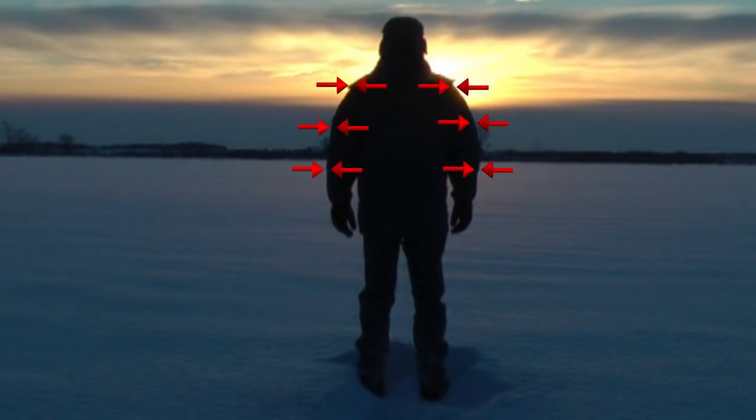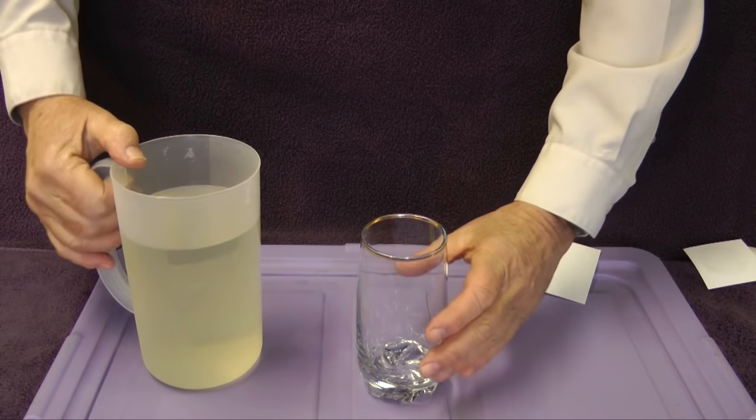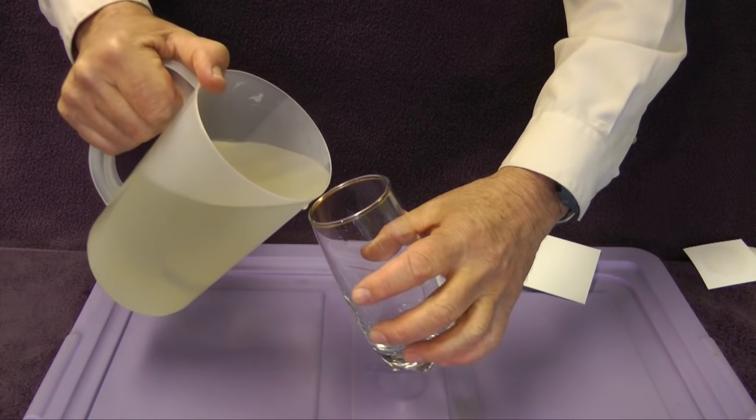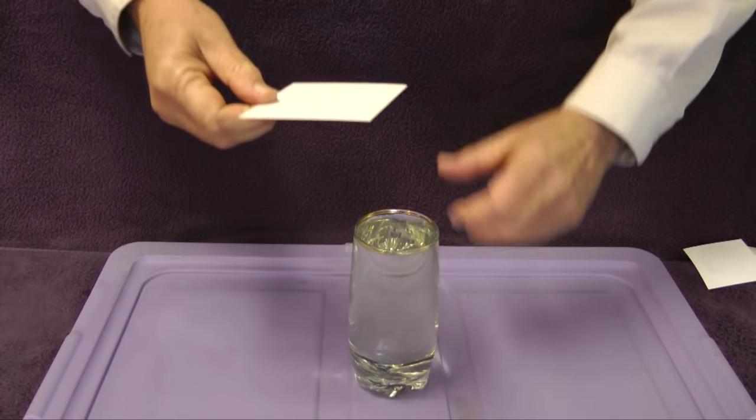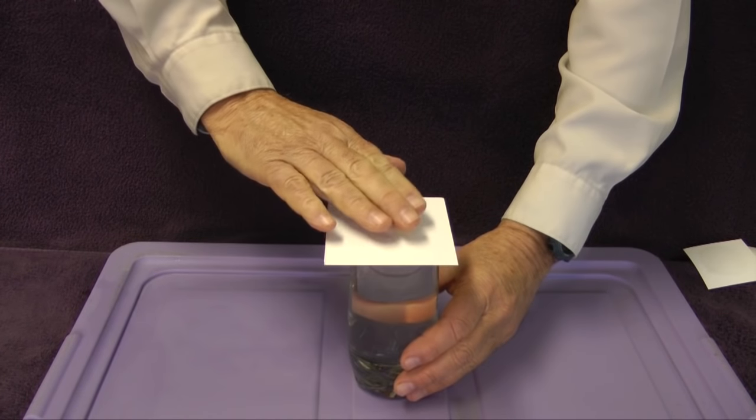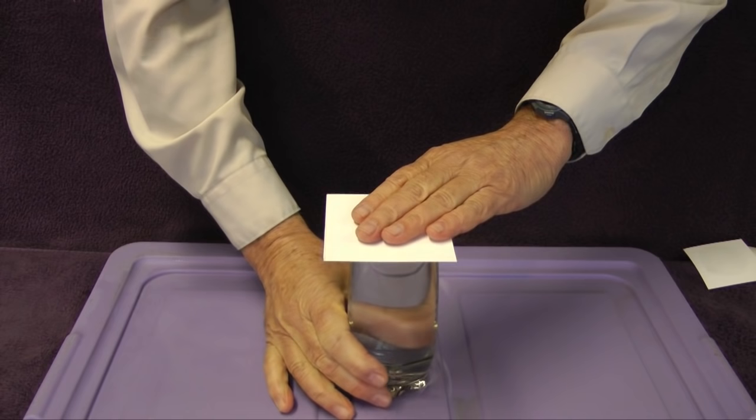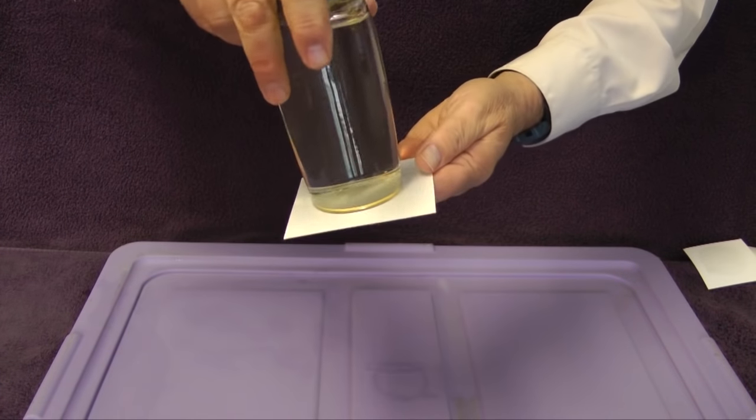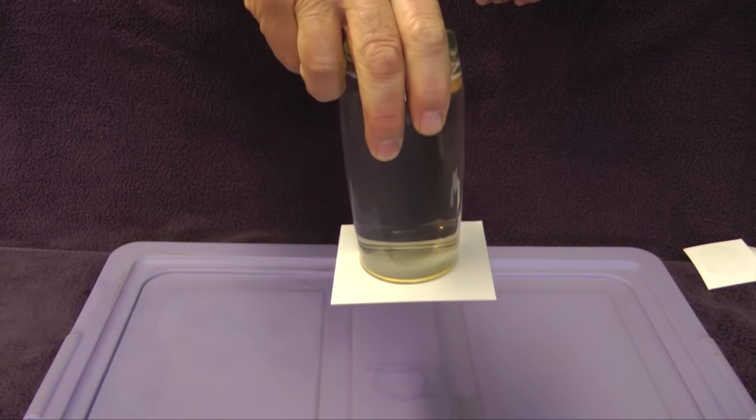Here is a simple demonstration that reveals the presence of atmospheric pressure. Fill a glass with water. Cut a small piece of card large enough to cover the top of the glass. Lay the card on the glass. Hold the card in place and rotate the glass full of water. Surprisingly, the water stays in the glass.